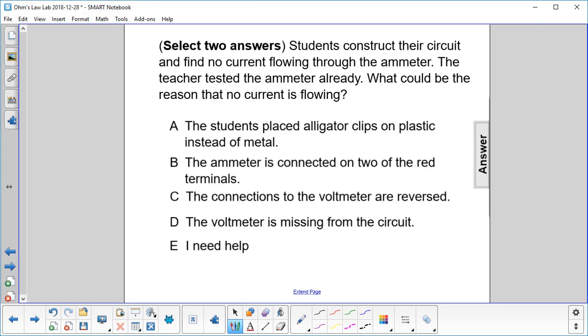Select two answers. Students construct their circuit and find no current flowing through the ammeter. The teacher already tested the ammeter. What could be the reason that no current is flowing?